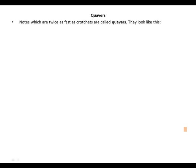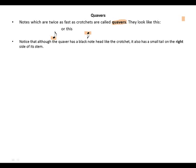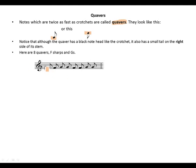Quavers. Notes which are twice as fast as crotchets are called quavers. We spell quavers like this, and quavers look like this - head up or down, head down or up with a stem. Notice that although the quaver has a black note head like the crotchet, it also has a small tail on the right side of its stem. Let's take a look at how we write eight quavers on F sharp and G. A quaver: a stem and a tail.